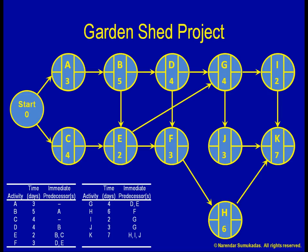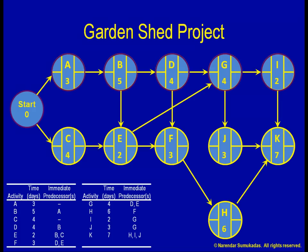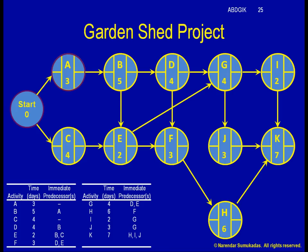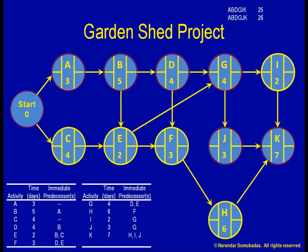How do we identify our critical path or figure out how quickly the project can be completed? One method is to trace every single path from beginning to end. The total of the activities on path A, B, D, G, I, K is 25 days — 3 plus 5 plus 4 plus 4 plus 2 plus 7. Likewise, the total for path A, B, D, G, J, K is 26 days. In a similar manner, we can list the total for every possible path.